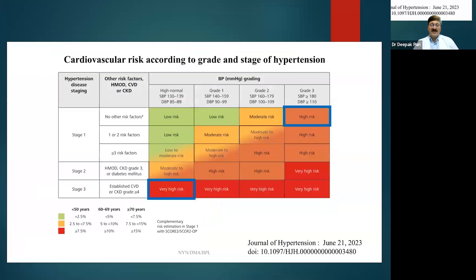As risk factors increase and blood pressure rises together, the risk of cardiovascular complications keeps increasing. When there are more than three risk factors and blood pressure rises above 140, the risk becomes high. Once blood pressure crosses 160, the risk becomes very high, and once it crosses 180, the risk is very very high.